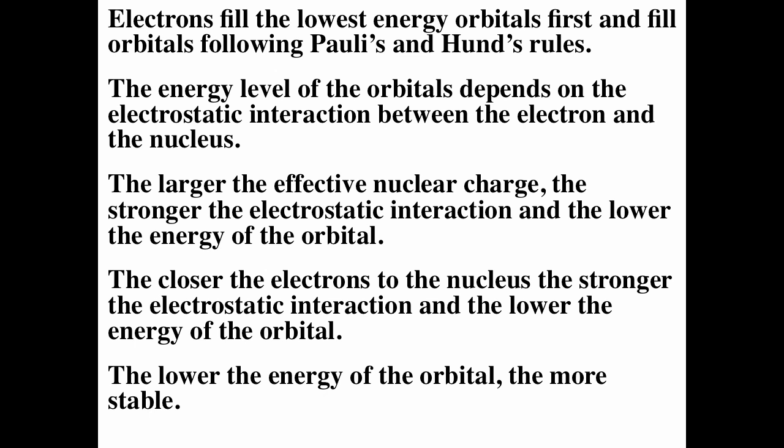Hund's Rule says that if you have orbitals that have the same energy, give them their own orbital as long as possible. The energy of orbitals depends on electrostatic interaction between the electron and nucleus. The larger the effective nuclear charge, the stronger the electrostatic interaction, and the lower the energy of the orbital. The closer the electron is to the nucleus, the stronger the electrostatic attraction, and the lower the energy of the orbital. The lower the energy of the orbital, the more stable.